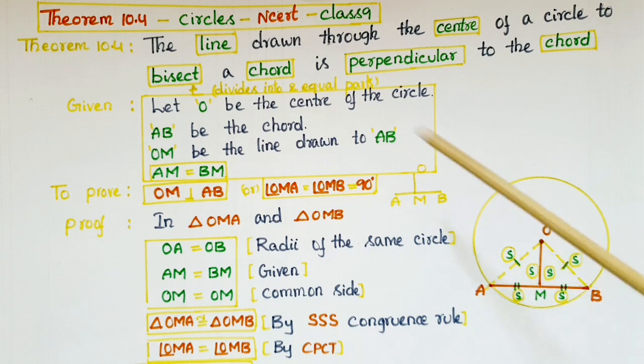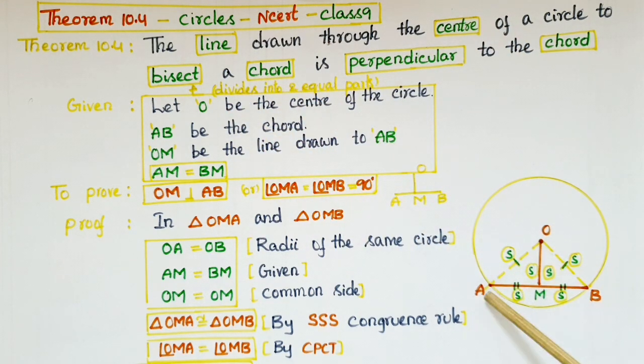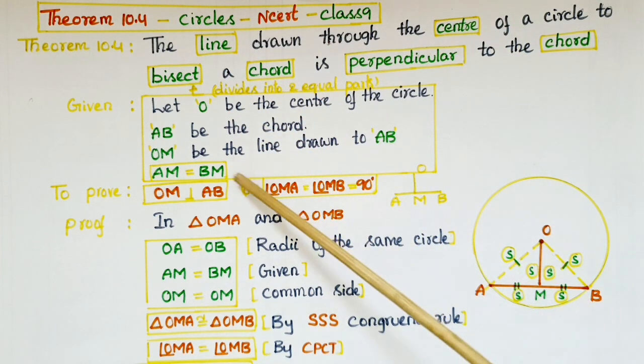Which bisects the chord. It is given in the problem. This line bisects the chord, so AM is equal to BM.